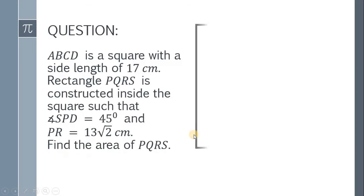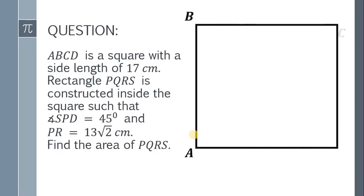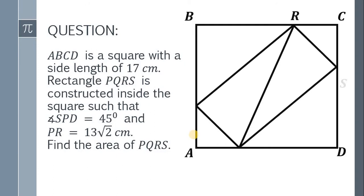Here's the question. ABCD is a square with a side length of 17 cm. Rectangle PQRS is constructed inside the square such that angle SPD equals 45 degrees and PR equals 13√2 cm. Find the area of PQRS.